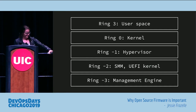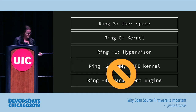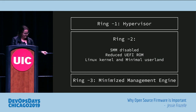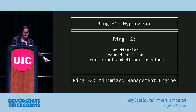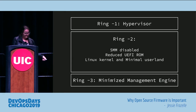Going back to the visual: we have user space on top, the kernel, hypervisor, SMM, UEFI, and the management engine — you're getting rid of those. You can't entirely get rid of UEFI, but you can make it super minimal. Same with the management engine. So zooming in: SMM is disabled, UEFI is minimalized, and then you have your Linux kernel with a minimal userland. Since it's a Linux kernel, your userland is tools that you know — you could use bash if you wanted to.